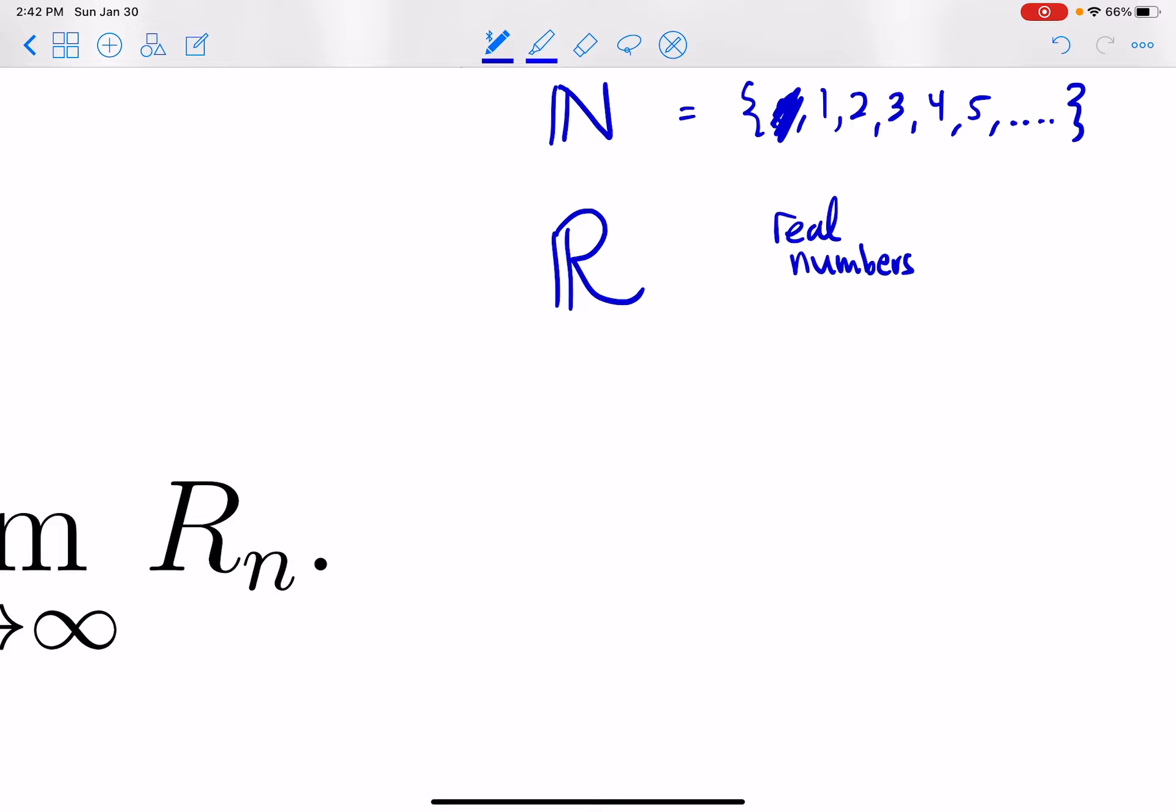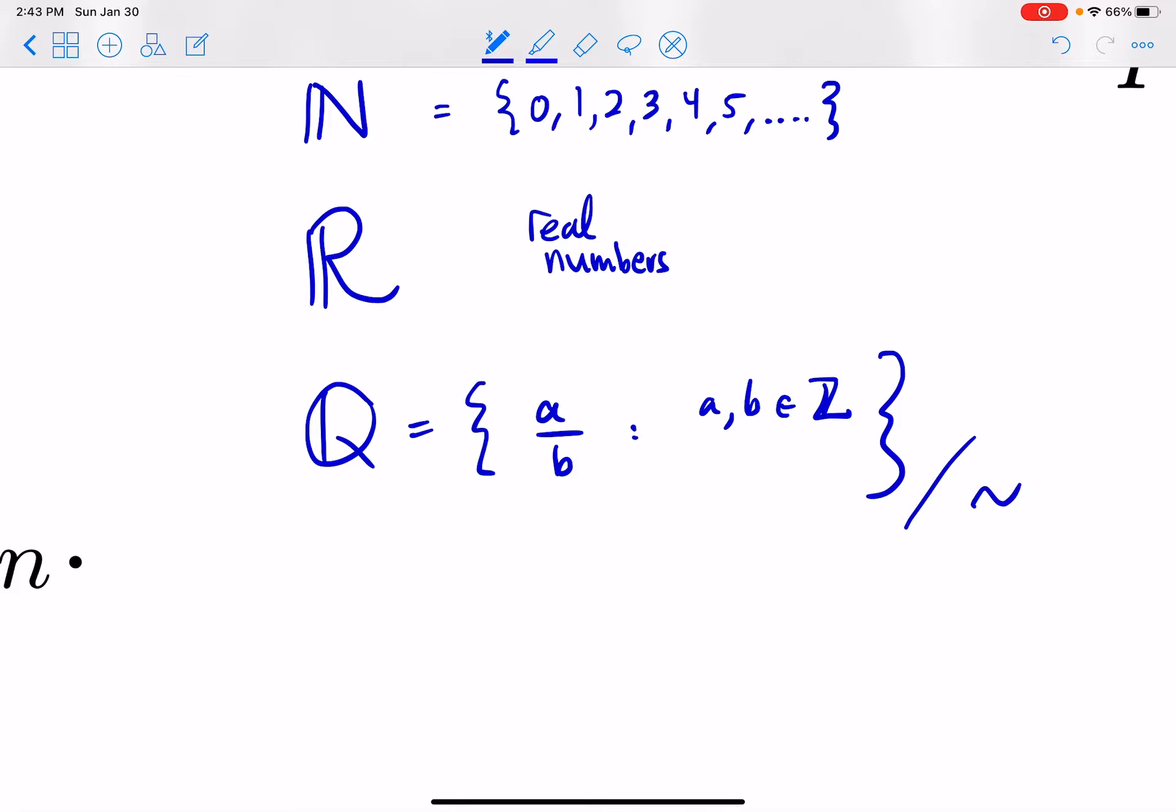And then there's the rational numbers, which are the set of all fractions A over B, such that A and B are integers. And we actually have to do something a little bit more. We have to glue things together. It's called an equivalence relation. But basically, you don't want to consider three-fourths and six-eighths to be completely different numbers. You want to say that they're the same. And so you put an equivalence relation just by cross-multiplying. Eight times three and six times four are both 24. And so we glue A over B to C over D whenever AD minus BC equals 0.